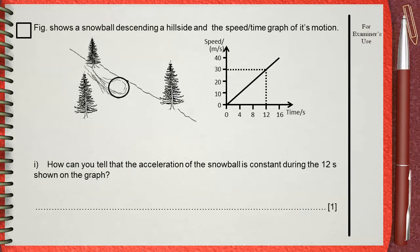Figure shows a snowball descending a hillside and the speed-time graph of its motion. Number 1: How can you tell that the acceleration of the snowball is constant during the 12 seconds shown on the graph?